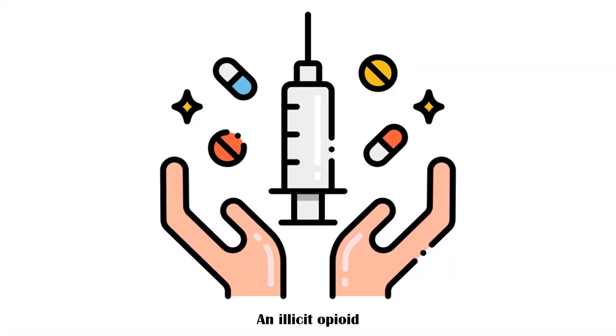Heroin is an illicit opioid which has been misused by people for decades. In the 21st century, the use of heroin has caused a massive increase in both dependence and overdose deaths.